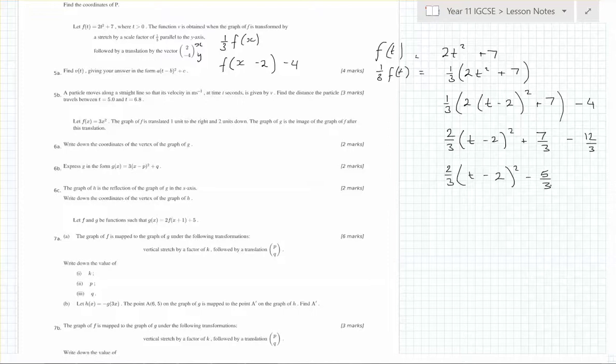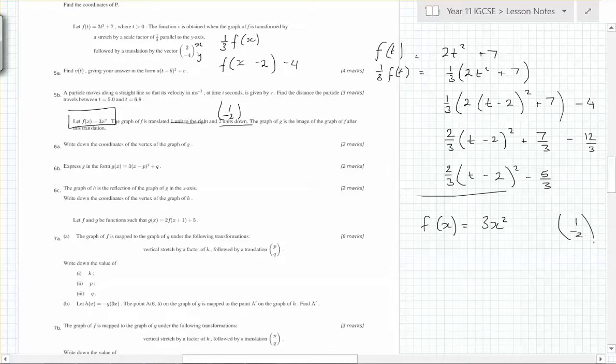Alright, so, you can't just multiply the whole thing by 3, and expect to keep the same thing. Let's have a look. So, we've got 3x squared, one unit to the right, two units down. So, that would be a vector of what? 1, minus 2. There's the vector. The graph is the image of the graph after this chart. So, you should be able to write that one quite easily now.